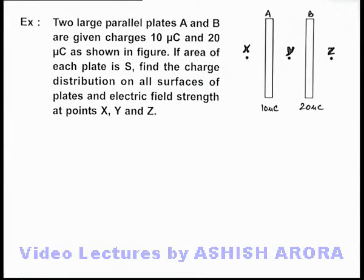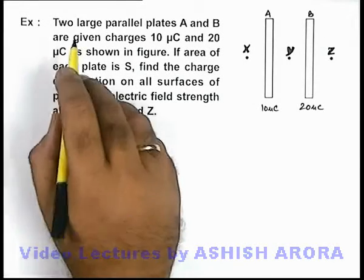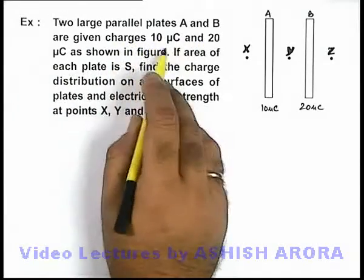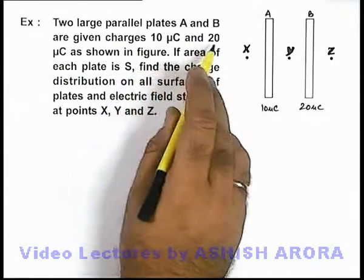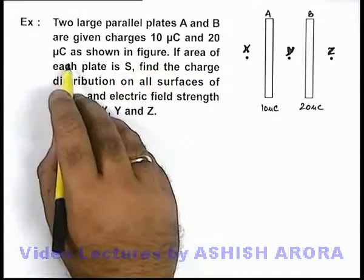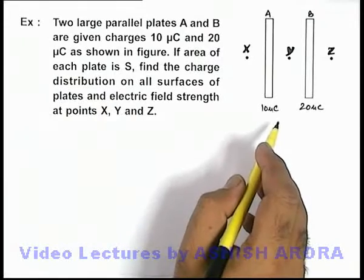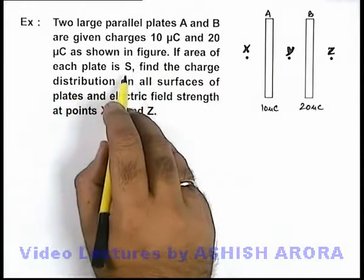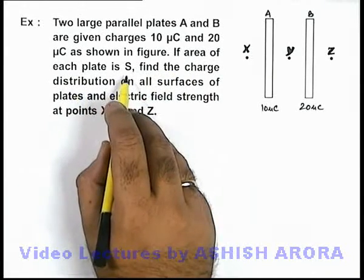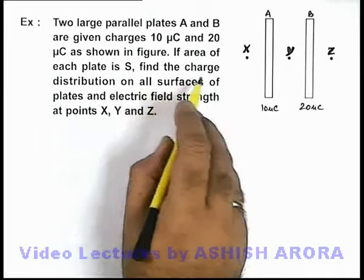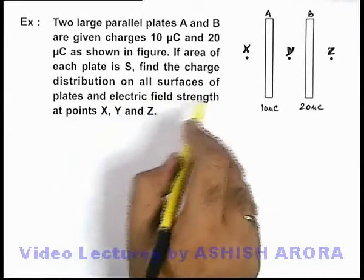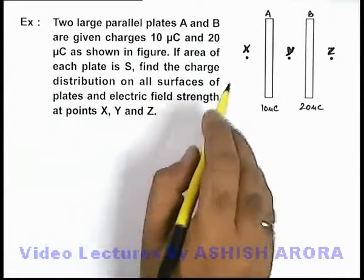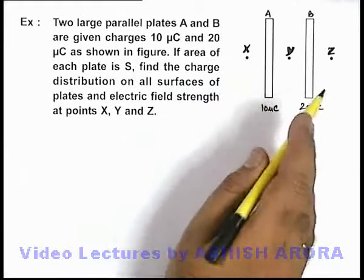In this example, we are given 2 large parallel plates. A and B are given charges 10 micro coulomb and 20 micro coulomb, as we can see in the figure. It is given that the area of each plate is S. We are required to find the charge distribution on all surfaces of the plates and the electric field strength at points X, Y, and Z.